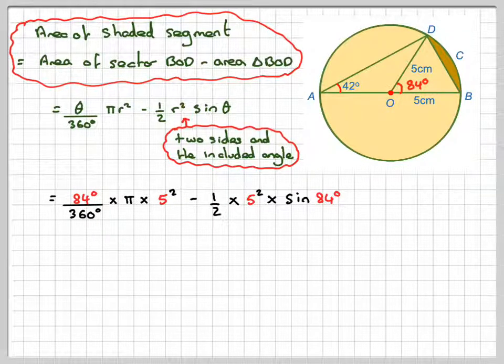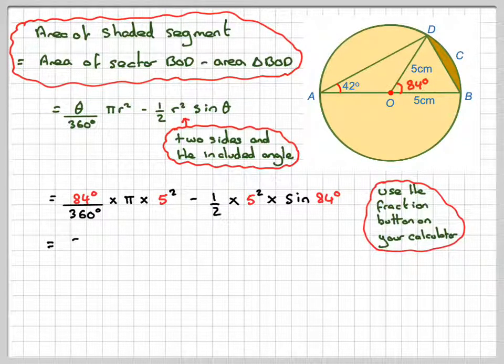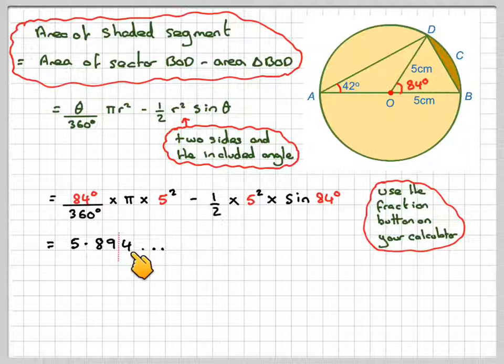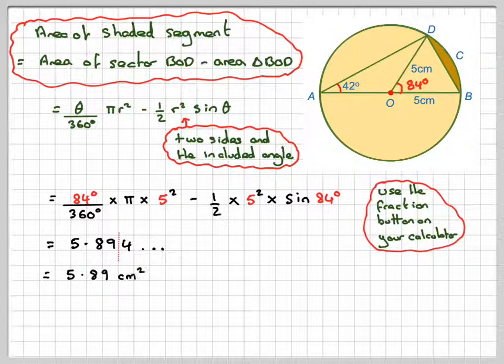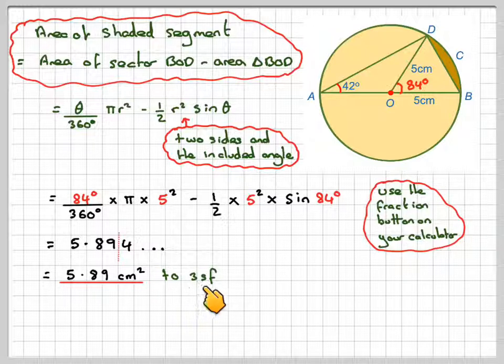Making sure our calculator is in degree mode, and use the fraction key for these. You can type it all in one go, and you'll get 5.894. To give answers to 3 significant figures, the final answer will be 5.89 cm squared, because it's an area.